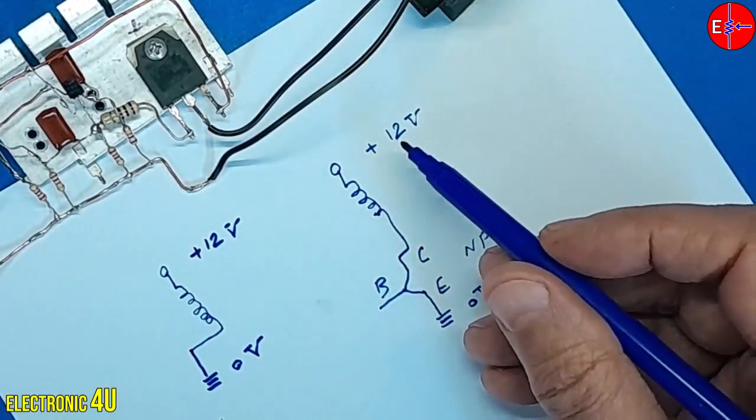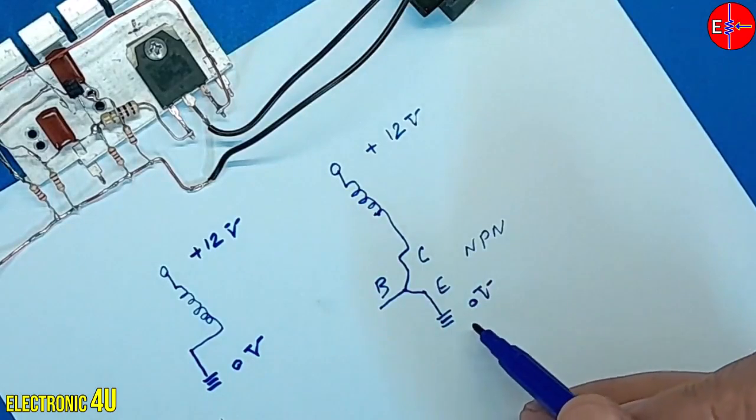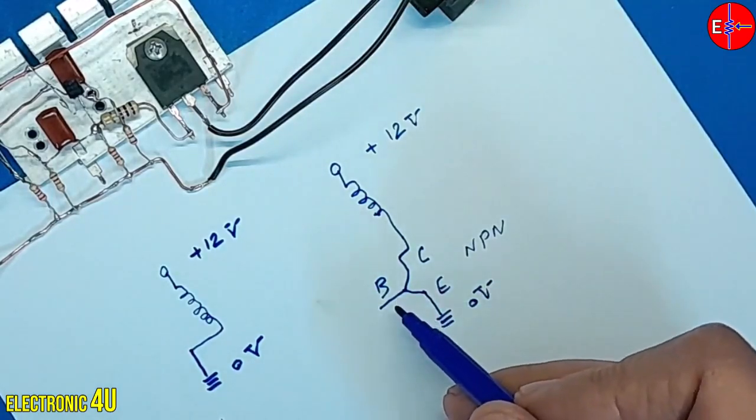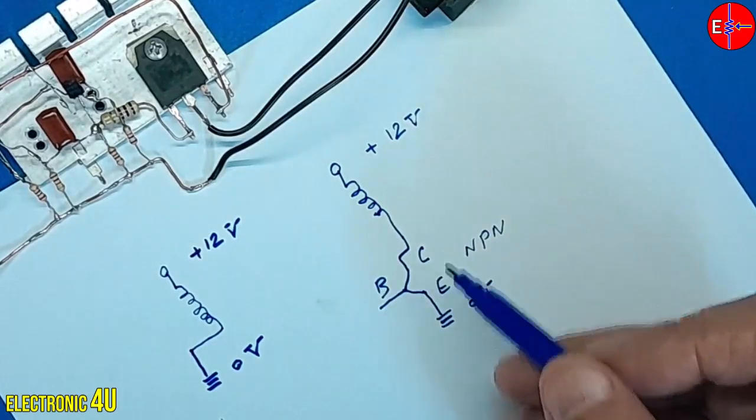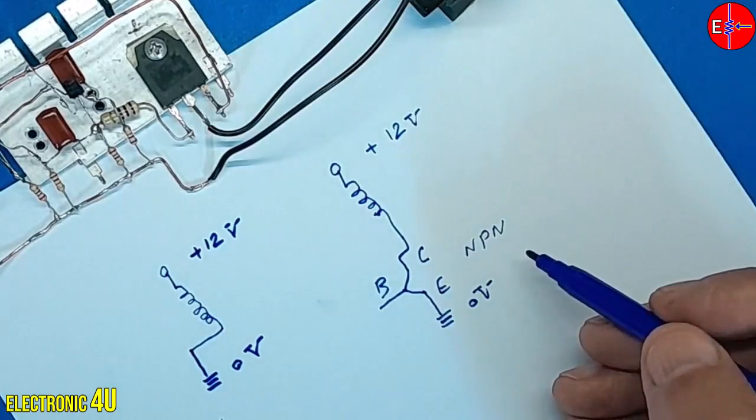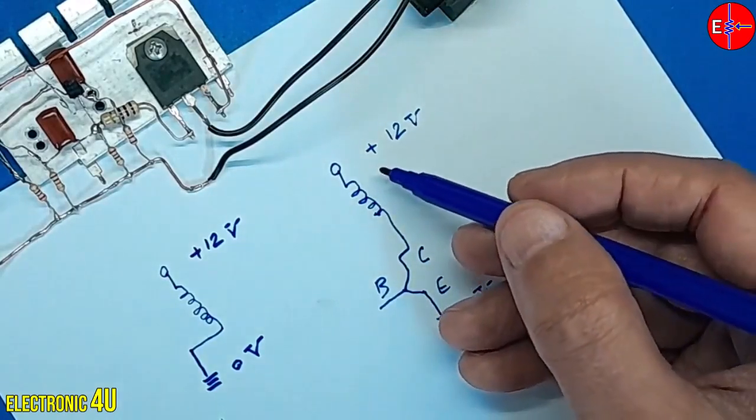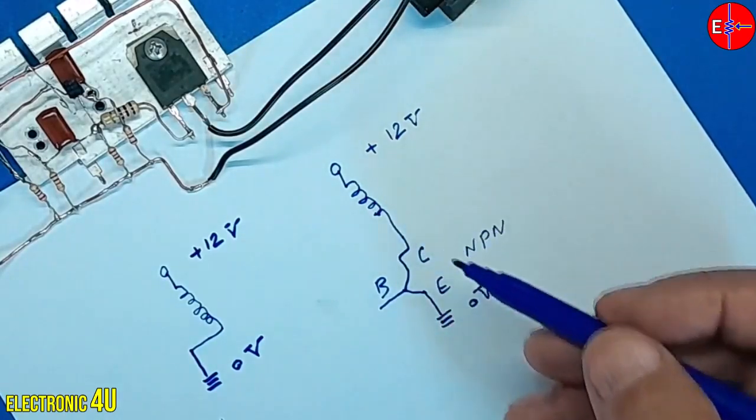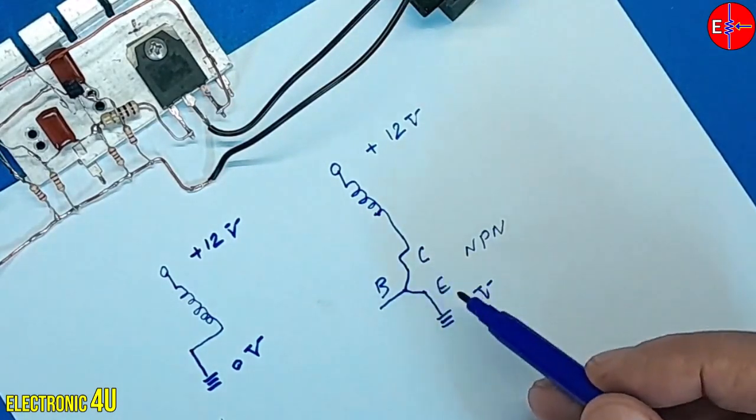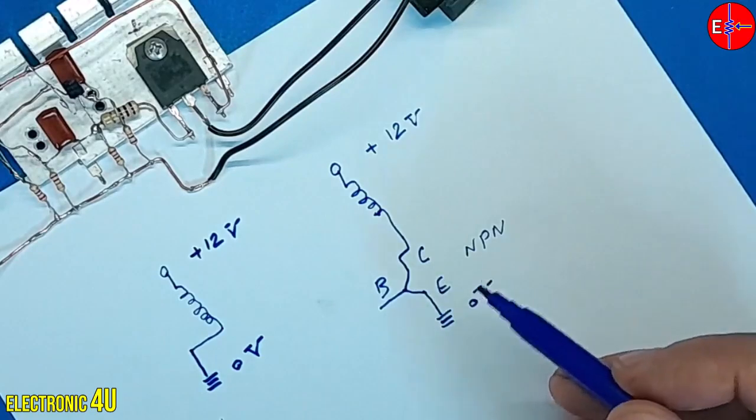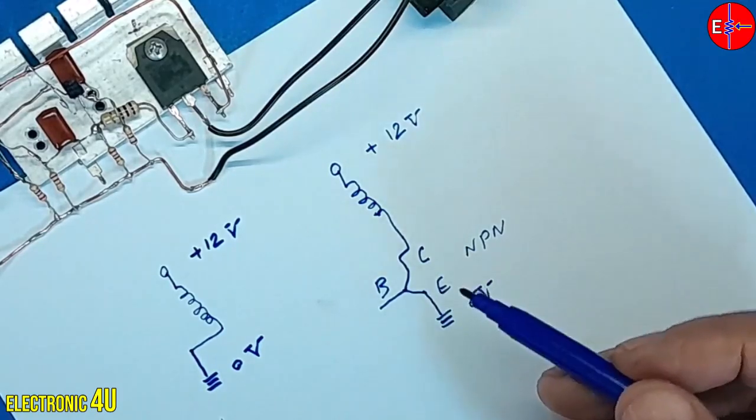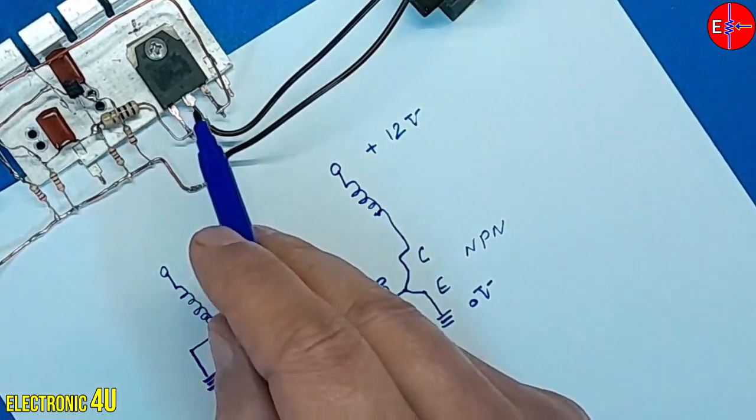Consequently, positive voltage never reaches 0 volts. Upon applying voltage to the base, the transistor turns on and remains in an activated state, creating a short circuit. Positive voltage traverses the coil and eventually reaches 0 volts. Therefore, we employ a transistor or MOSFET.